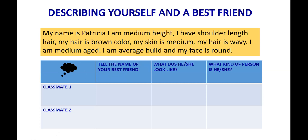For describing myself, in my case I say: my name is Patricia, I am medium height, I have shoulder-length hair, my hair is brown color, my skin is medium, my hair is wavy, I am middle-aged, I am average build, and my face is oval.